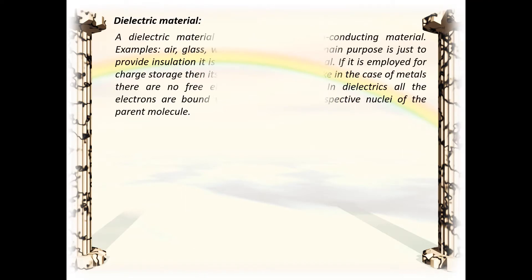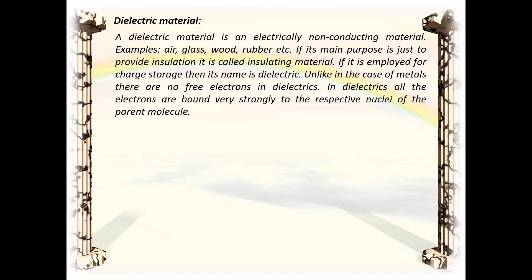A dielectric material is an electrically non-conducting material. Examples are air, glass, wood, rubber, etc. If its main purpose is to provide insulation, it is called an insulating material. If it is employed for charge storage, then its name is dielectric. Unlike metals, there are no free electrons in dielectrics. All the electrons are bound very strongly to the respective nuclei of the parent atoms.